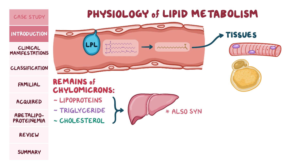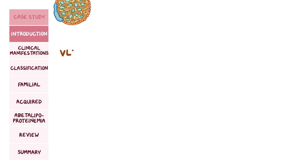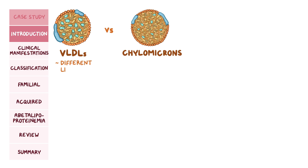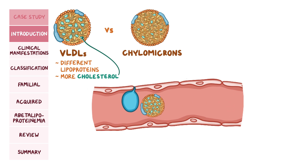These chylomicron remnants head to the liver to deposit the leftover lipid molecules. The liver is also synthesizing fatty acids and cholesterol, and it will combine these with the ones from the chylomicron remnants and package them together. Instead of chylomicrons, they are packaged into very low-density lipoproteins, or VLDLs. VLDLs are released from the liver and enter into the blood where lipoprotein lipase in the capillaries breaks them down again to release triglycerides for nearby tissue to use.